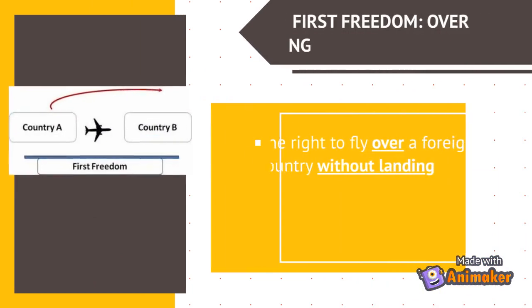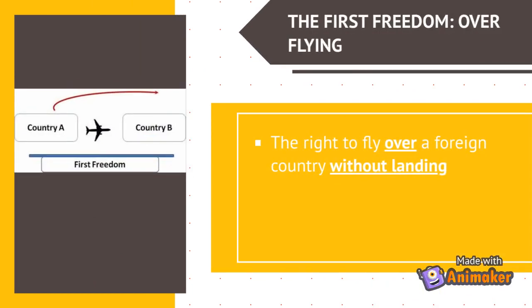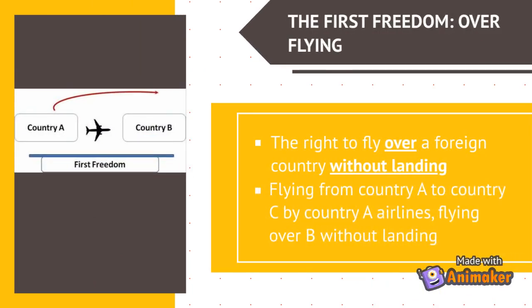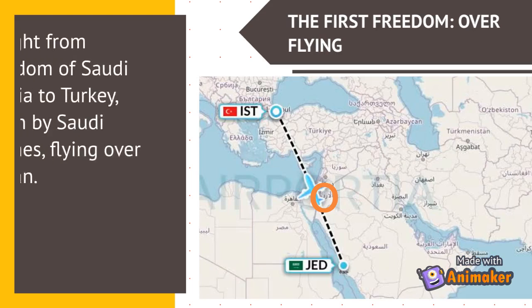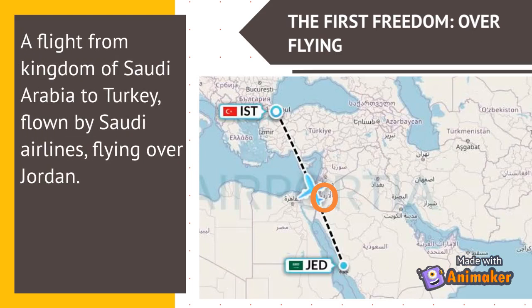The first freedom is overflying — the right to fly over a foreign country without landing. For example, flying from country A to country C by country A's airline, flying over country B without landing. A real example is a flight from KSA to Turkey, flown by Saudi Airlines, flying over Jordan. Jordan is circled with orange color.